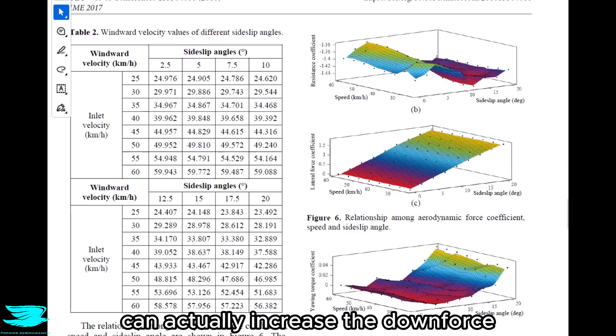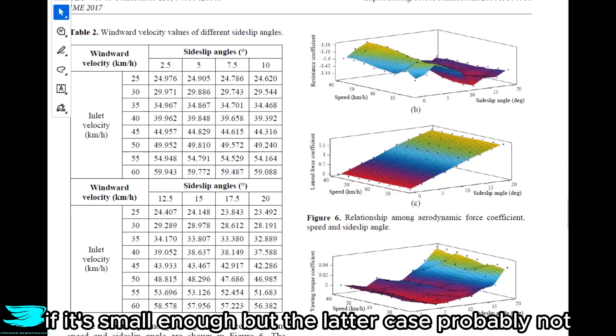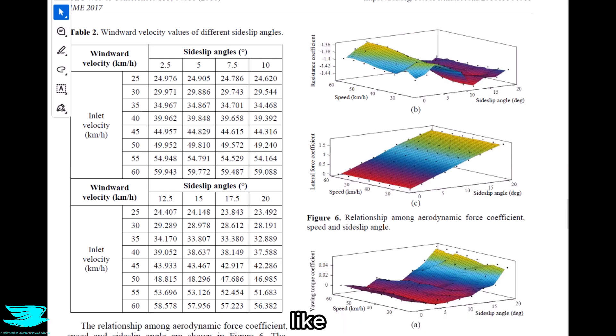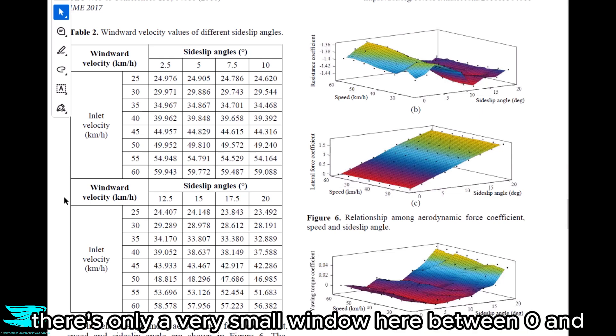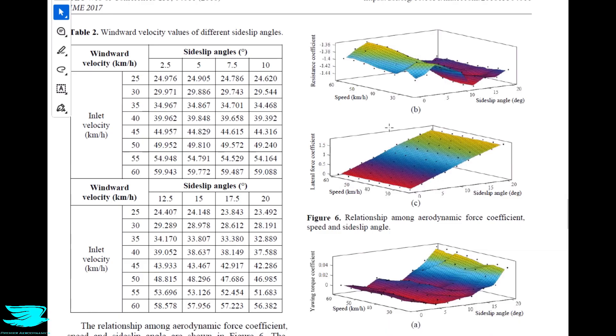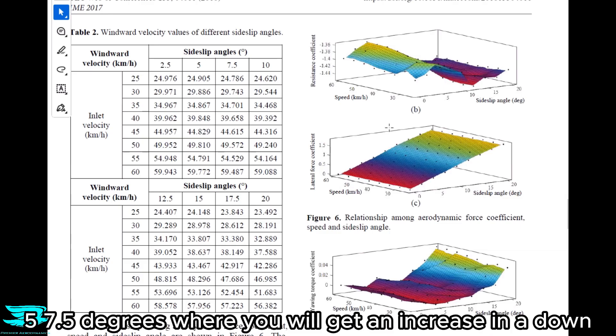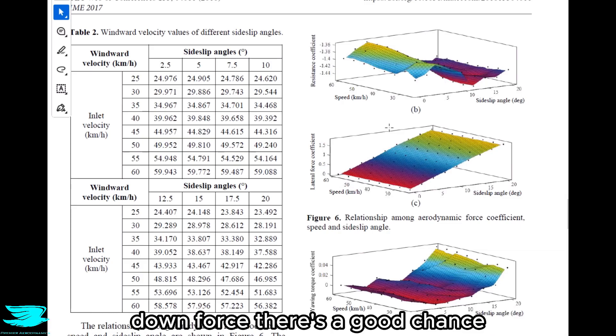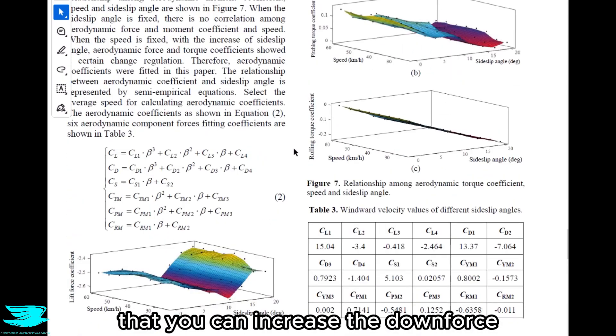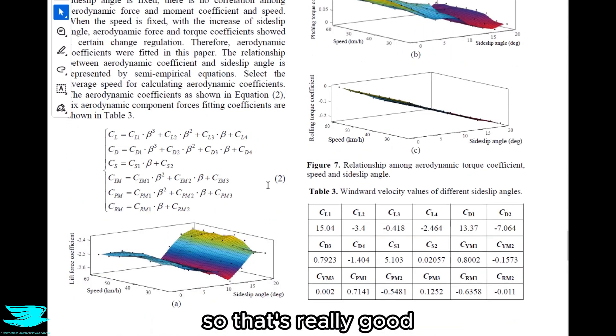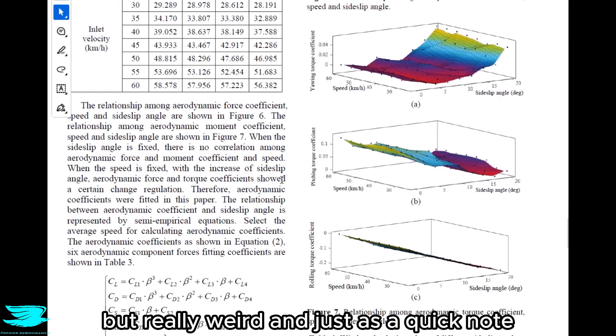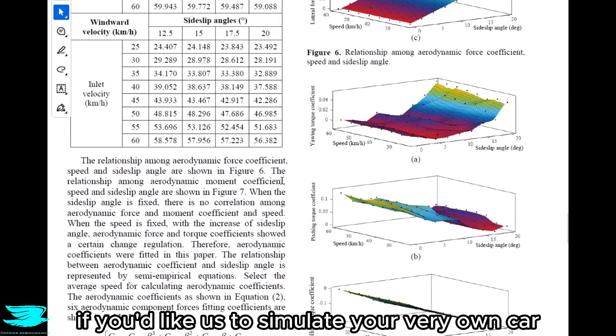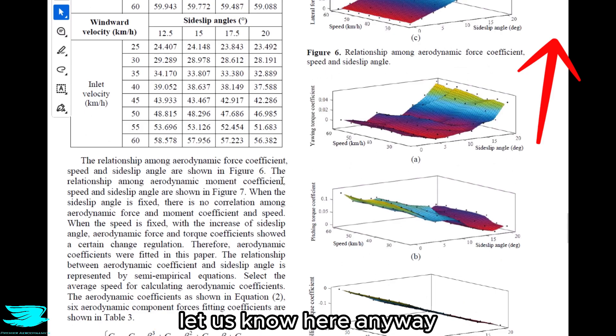So recapping the forces, side-slip can actually increase the downforce and reduce the drag if it's small enough. But the latter case probably not, like there's only a very small window here between 0 and 5, 7.5 degrees where you will get a reduction in drag. For the former though, for the downforce, there's a good chance that you can increase the downforce just by side-slipping your car. So that's really good, but really weird. And just as a quick note, if you'd like us to simulate your very own car, let us know here.